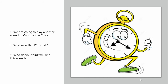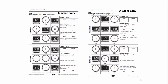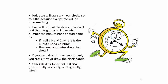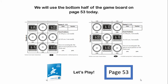We're going to play another round of capture the clock. Who won the first round? That's right, I won the first round. So who do you think will win this round? Here is a copy of our capture the clock game. We've already used the top portion, so today we're going to use the bottom portion. We're going to start our clocks at three o'clock because every time we roll, we're going to have three something. I will roll both dice and add them together to know what number the minute hand should point to. If I roll a three and a two, where's the minute hand pointing? That's right, to the five — 25 minutes past the hour. If you have that time on your board, cross it off or draw the clock hands. First player to get three in a row horizontally, vertically, or diagonally wins. Yours is on page 53 of your number corner student book.